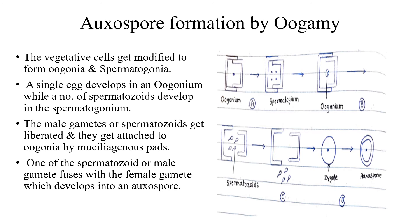In the oogonium, the egg develops with a sporophytic nucleus, which undergoes meiosis and produces four nuclei. Out of the four, three degenerate and only one is functional, behaving as the egg or the female gamete.